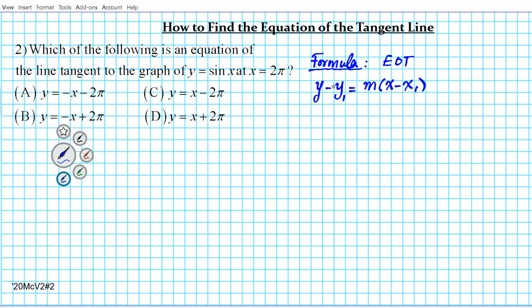The calculus component involves the fact that you need a slope using only one point. The only way you can find a slope with a point, you need calculus. The m component is your slope, and that's going to be f prime evaluated at x one. The derivative at the point is known as your SOT — the slope of the tangent line.